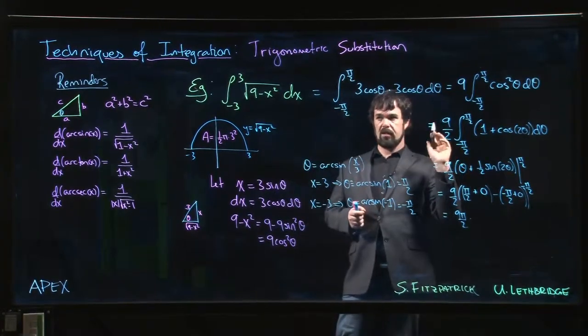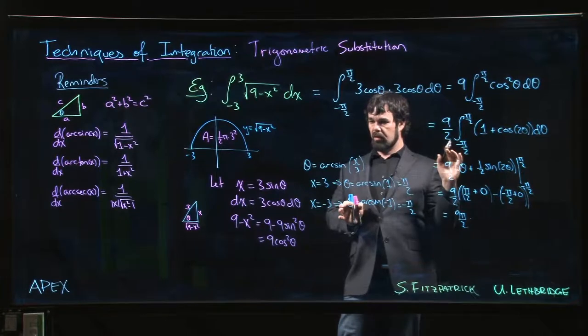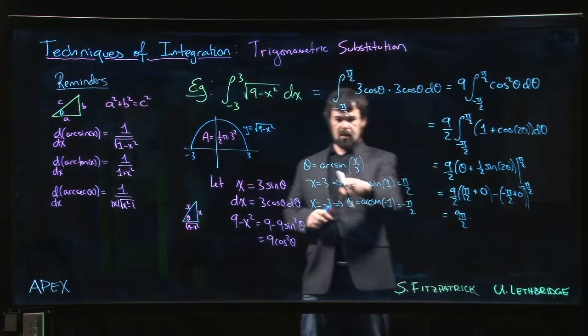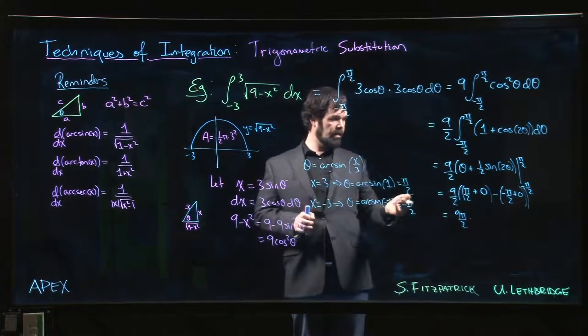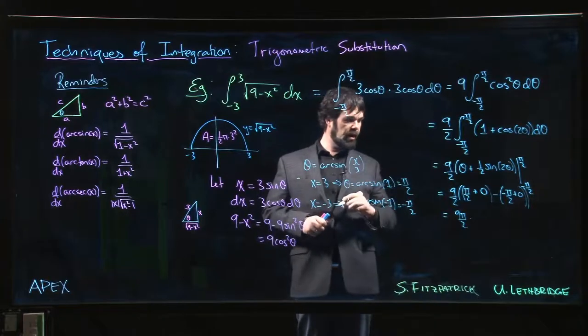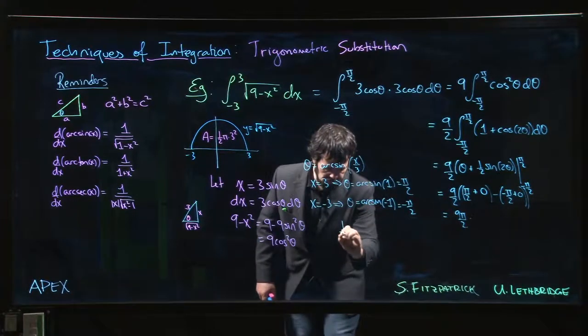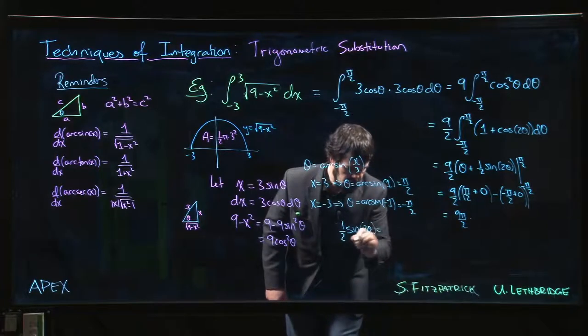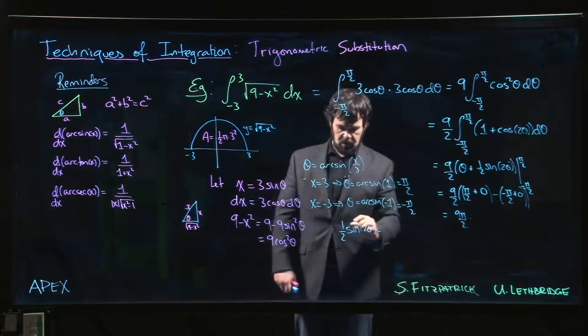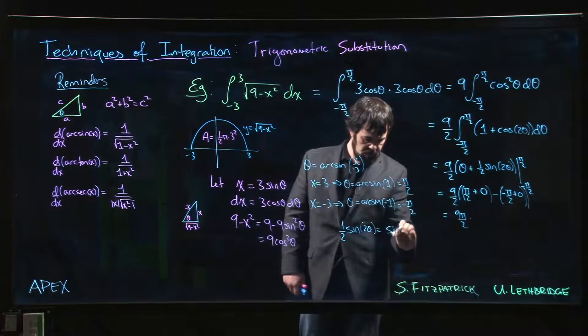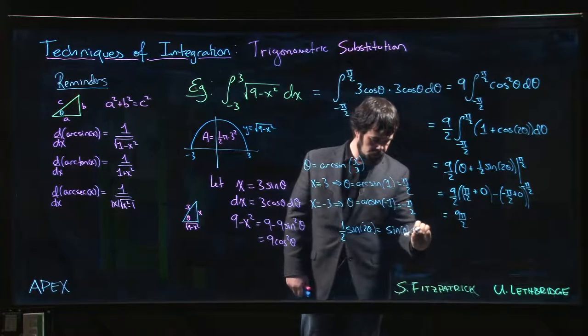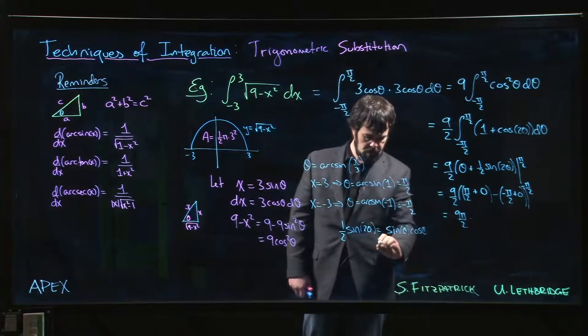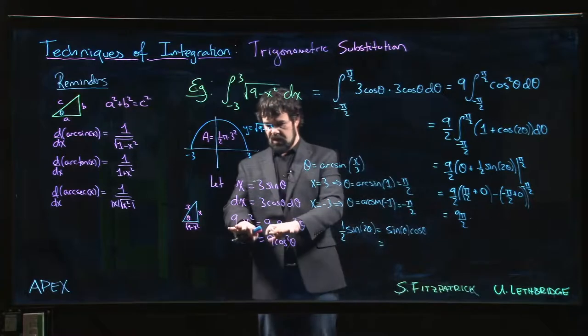From here, if we were doing just the indefinite integral, well, theta is arc sine of x over 3. We have that there. What do you do with the sine 2 theta? Well, we'd have to do this. We'd have to say 1 half of sine 2 theta. Well, sine 2 theta is 2 sine theta cos theta. So this becomes simply sine theta times cos theta. And then we have to come back over to here, and we have to say, well, look,